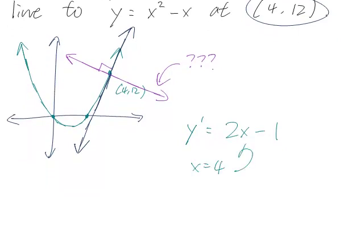We want to plug that in here, so the slope of the tangent line, notice that I didn't just write m, I wrote m tangent, because now I'm going to have two slopes in this problem. So this is 2 times 4 minus 1, or 7.